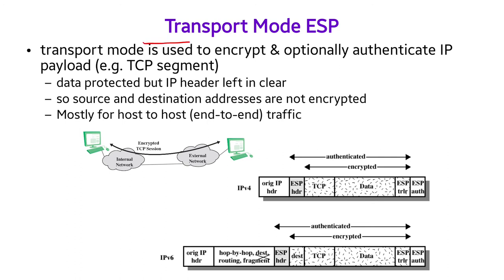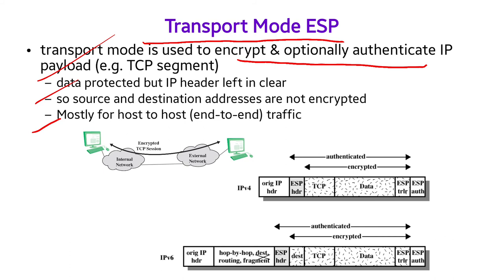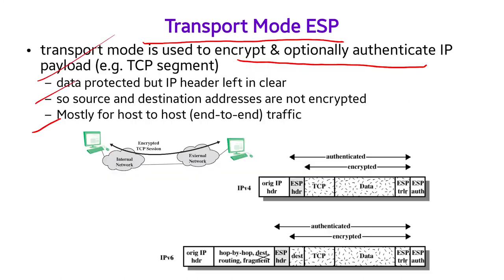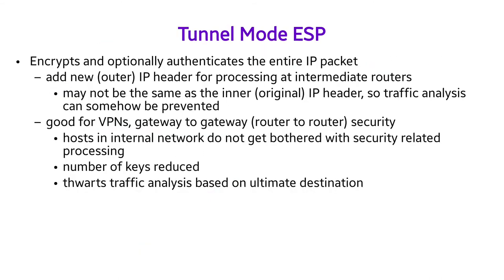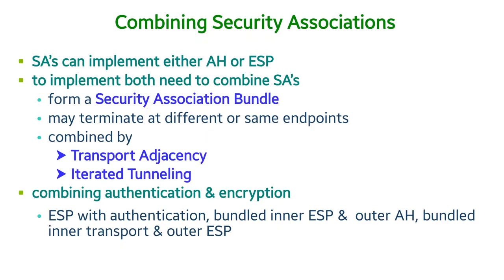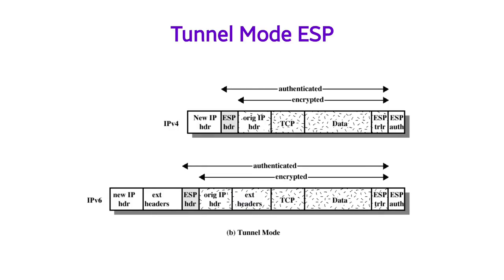In transport mode ESP, end-to-end communication between two nodes is covered. The IP header is retained, the payload is encrypted, and a ciphertext header is attached. The destination detaches and decrypts. In tunnel mode, a new IP header is added, the entire original packet is encrypted, and the destination decrypts using the secondary header for final routing.